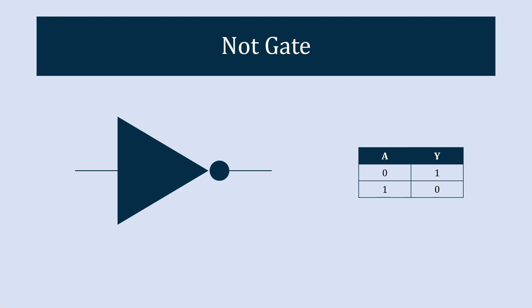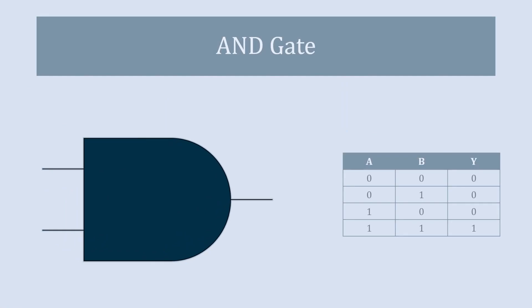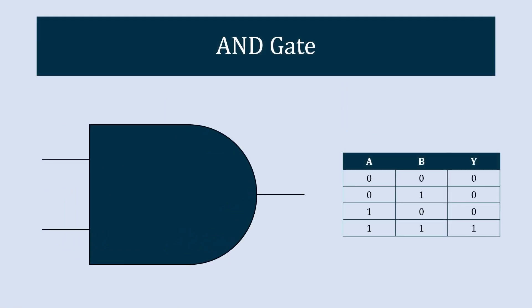The next gate in the list is known as the AND gate. The symbolic representation of the AND gate is D-shaped with inputs on the left and the output on the right. Here you can see the truth table of the AND gate.